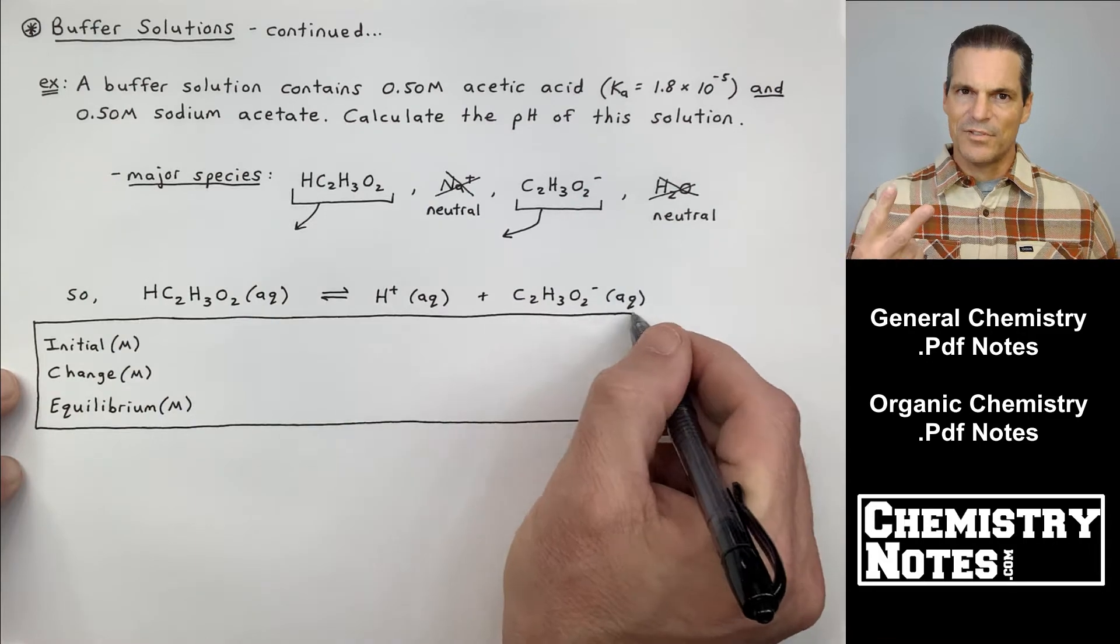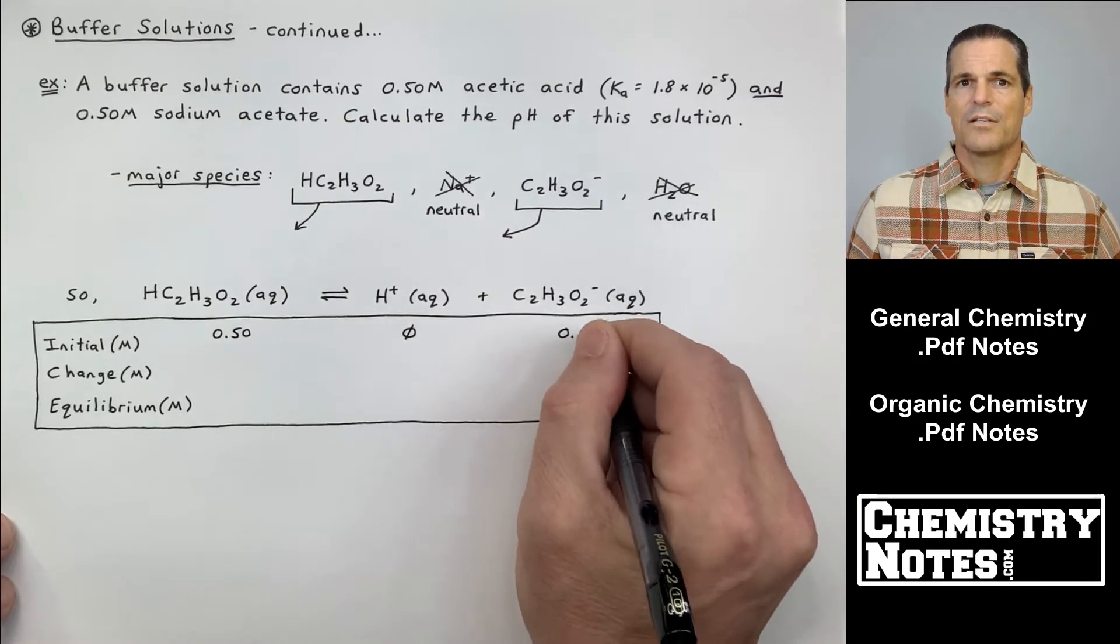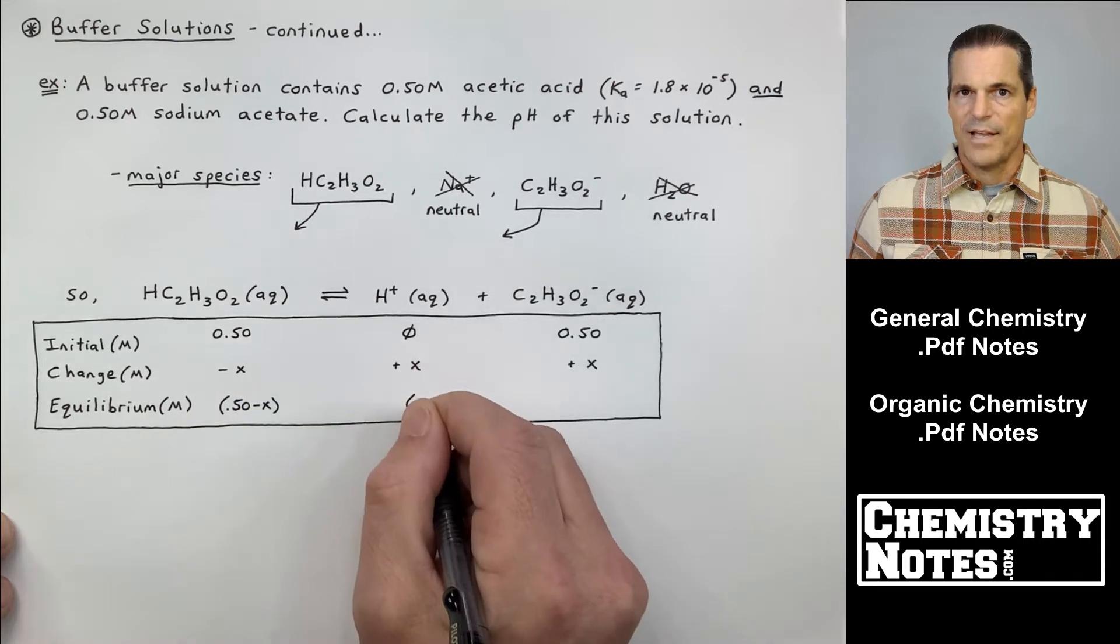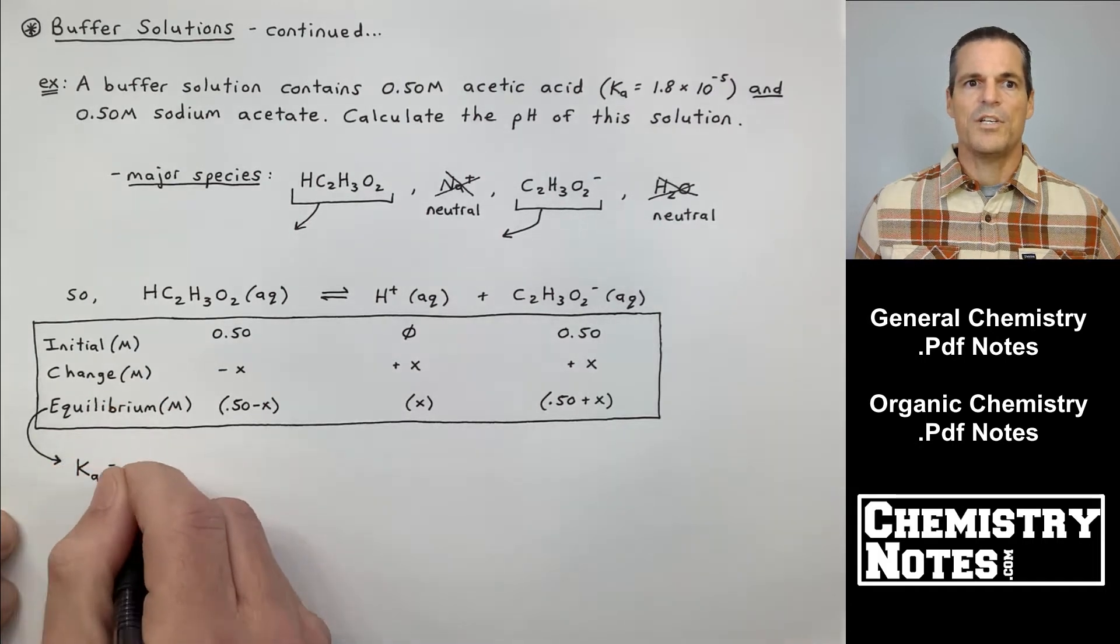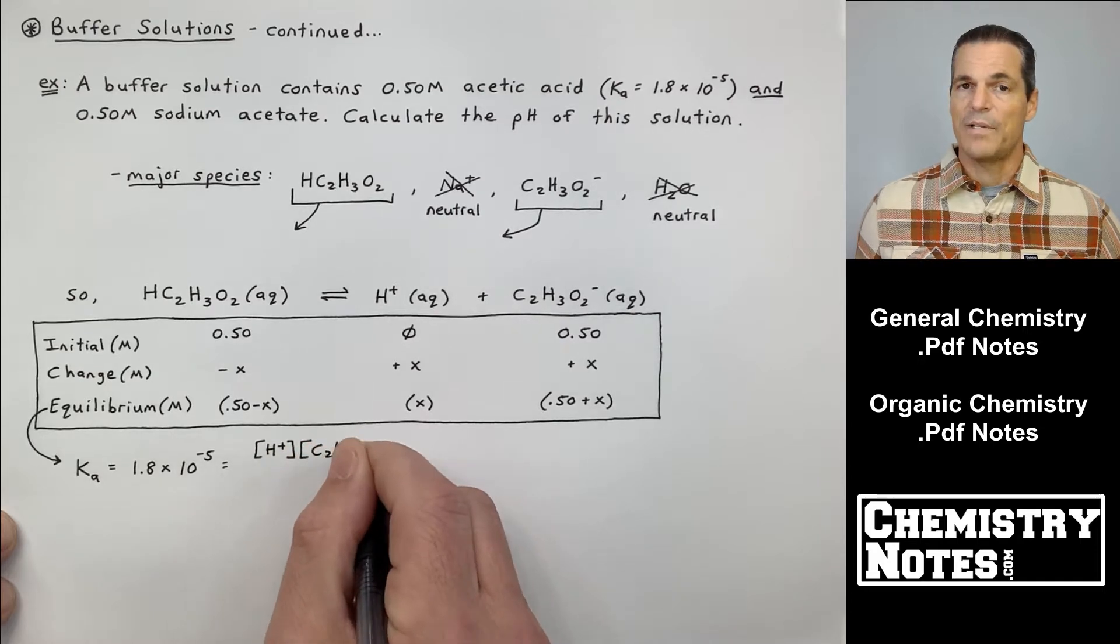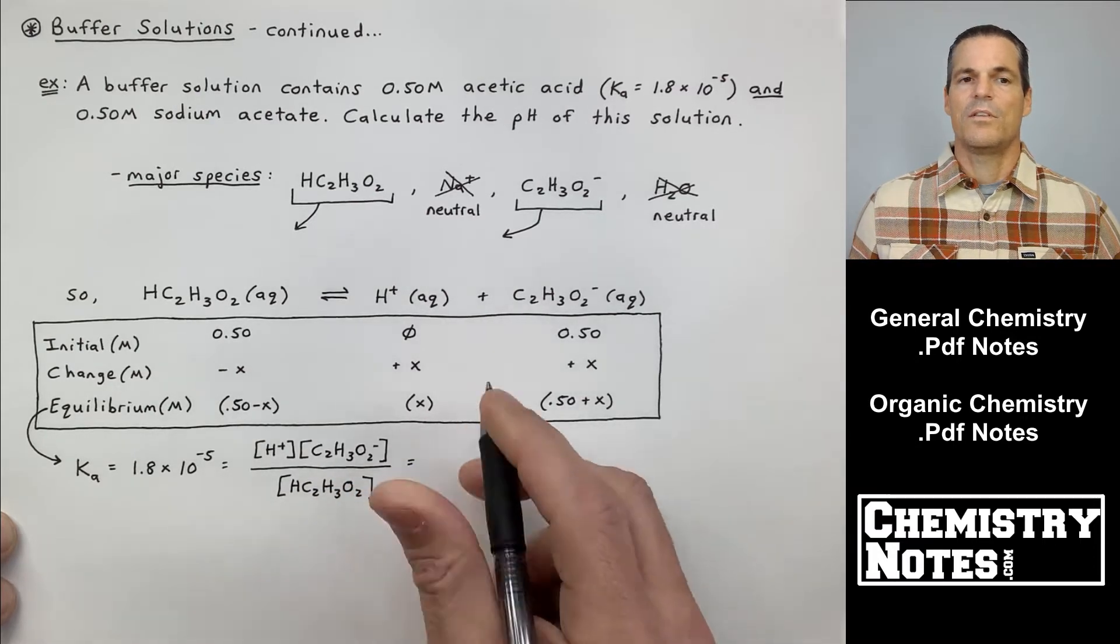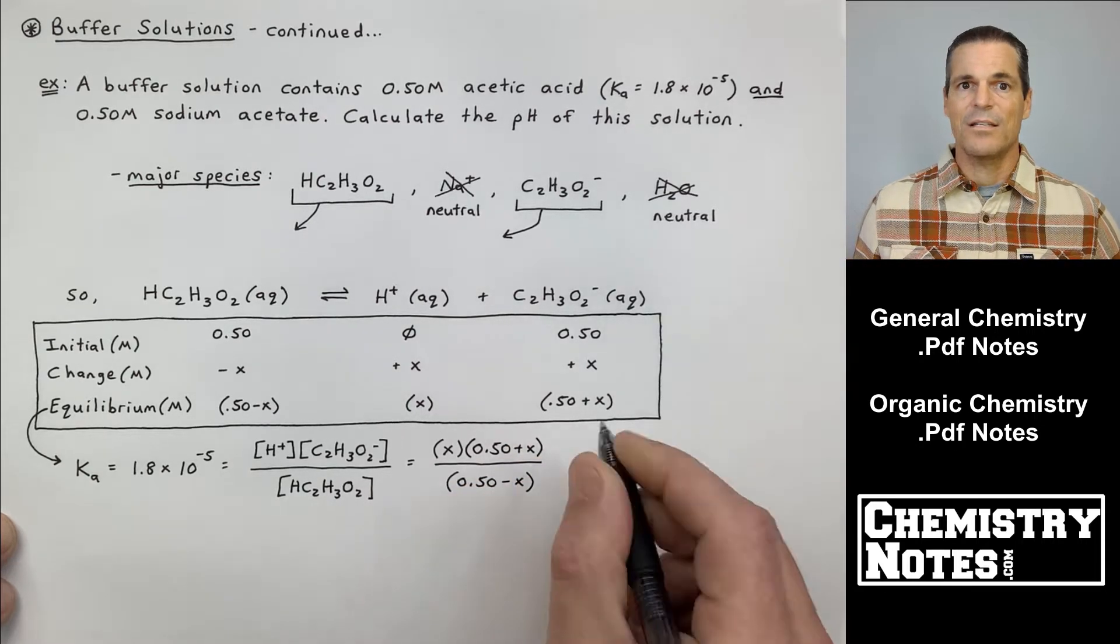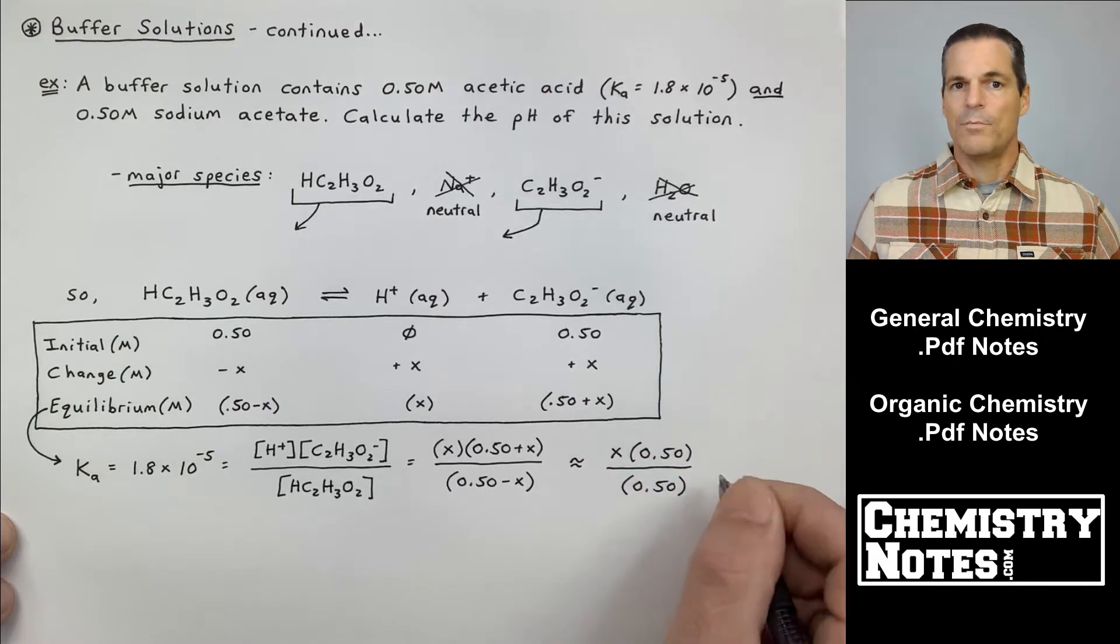And there's basically a two-step approach where the first step is the only thing that's really different. So it says the buffer solution contains 0.50 molar acetic acid, 0.50 molar sodium acetate. Sound familiar? Calculate the pH of the solution. We get rid of all the neutral species. We set up our ice table. And remember, we have a common ion now. The sodium acetate gives us the acetate to begin with. So the initial concentrations, there's two of them for once. 0.50 molar acetic acid, 0.50 molar acetate, the far-right product.